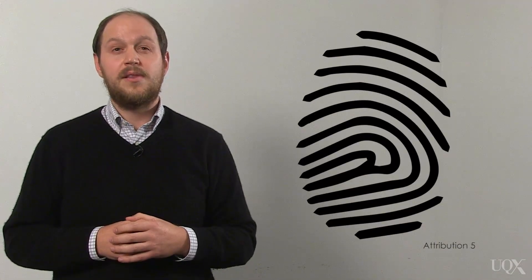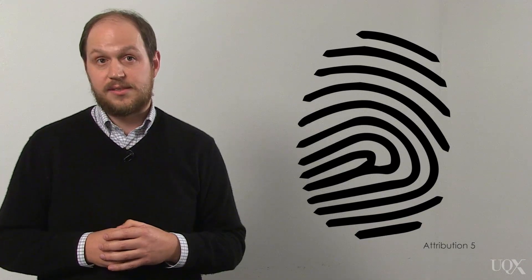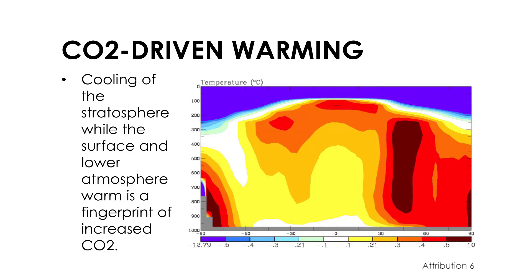But we can be even more confident, because greenhouse warming will leave different fingerprints on the climate than other possible causes. We've known for many decades that increasing levels of CO2 in the atmosphere will produce a unique pattern of temperature change from the surface to the upper atmosphere. The surface and lower atmosphere will warm, while the upper atmosphere will cool.